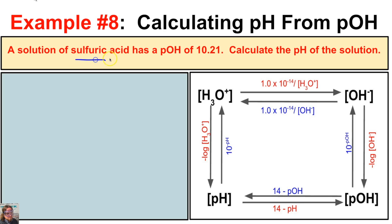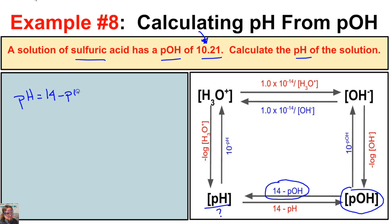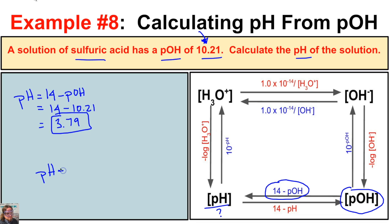In this eighth example, a solution of sulfuric acid has a pOH of 10.21 and we need to calculate the pH. To get the pH all we need to do is take 14 minus the pOH — 14 minus 10.21 — and we end up with a pH of 3.79. Always remember that pH plus pOH always equals 14, which is equivalent to saying [H3O+] times [OH-] always equals 1.0 times 10 to the negative 14.